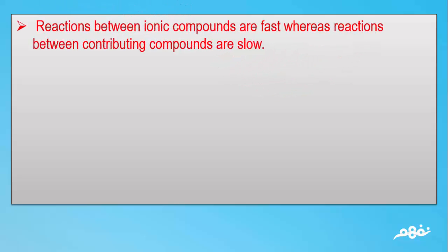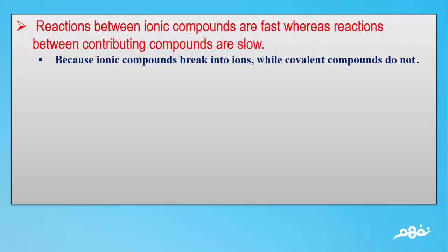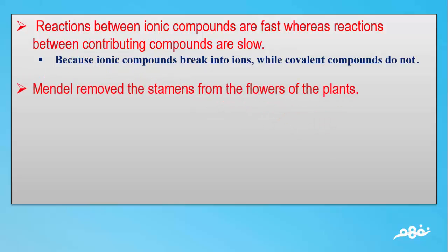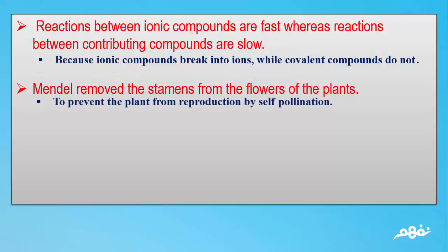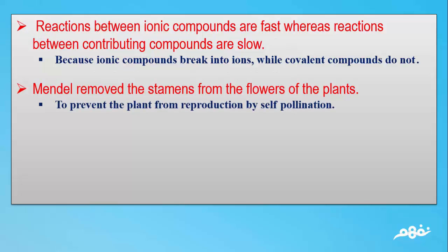Number 5: Reactions between ionic compounds are fast whereas reactions between covalent compounds are slow. The answer: Because ionic compounds break into ions while covalent compounds do not. Number 6: Mendel removed the stamens from the flowers of the plants. The answer: To prevent the plant from reproduction by self-pollination.